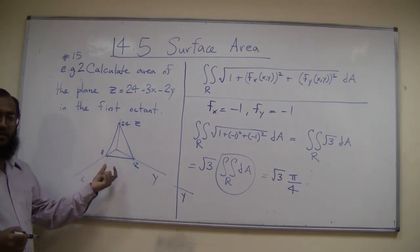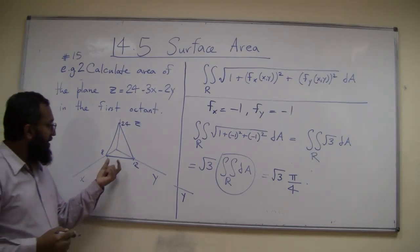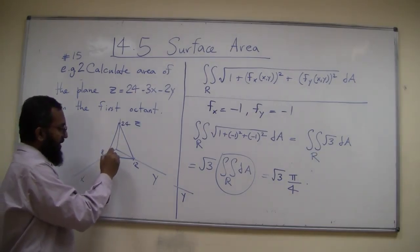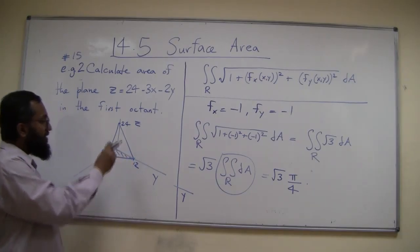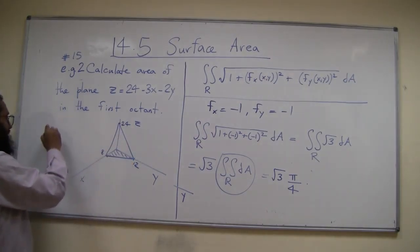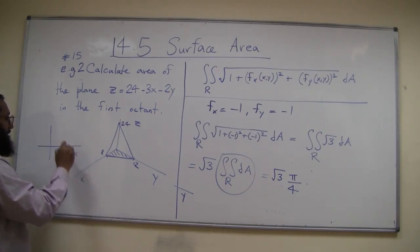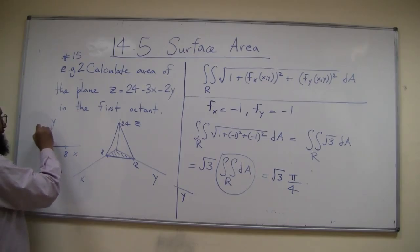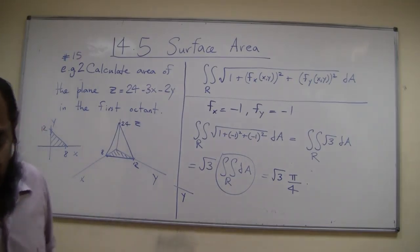What is the region R here? That's the main question. The region R is actually this whole triangle, because this plane is over that whole triangle. The region R, if I were to draw it in the xy plane, is x equals 8 and y equals 12. So how do we do this?